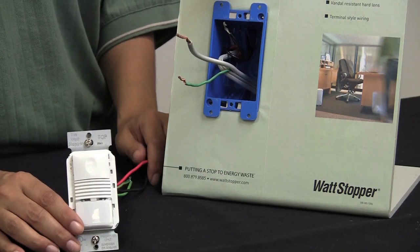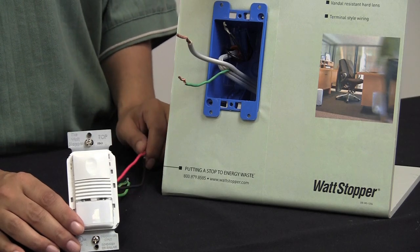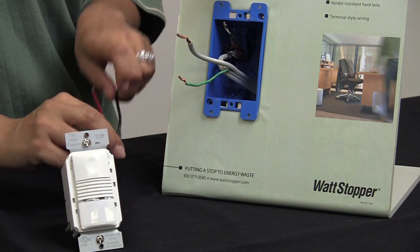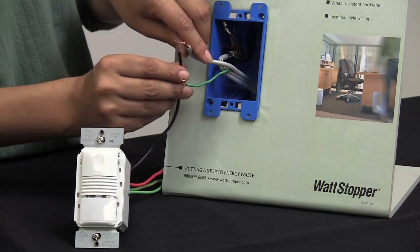So now we will wire up the PW100. Please be sure that all power is disconnected to the wall box before starting your wiring connections. First we will take the black wire from the sensor and wire that to our incoming hot.